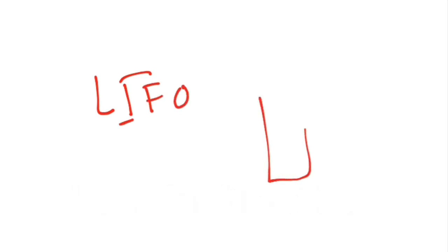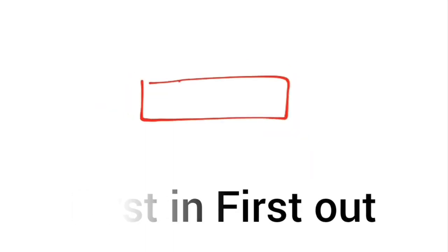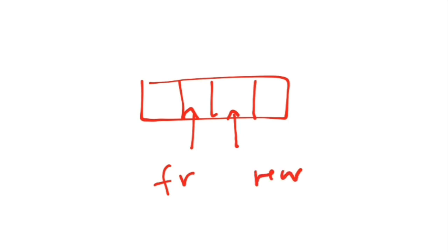After knowing that, you have to know what LIFO is. LIFO means Last In First Out — in a stack, the element inserted last will be output first. In a queue, you will have FIFO. A queue has a front pointer and a rear pointer. To insert an element, you insert from the rear — shift the rear pointer and insert the element there. For deleting, you shift the front pointer.